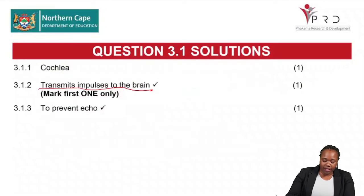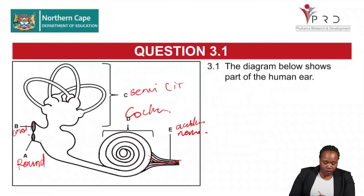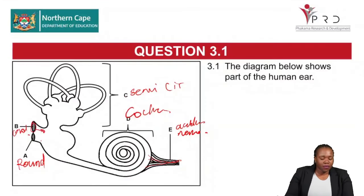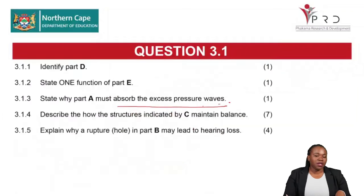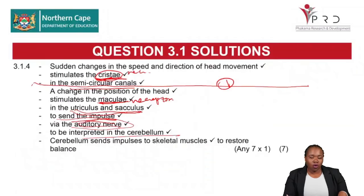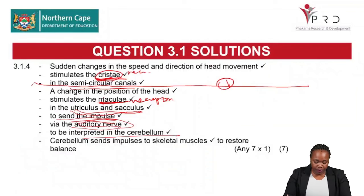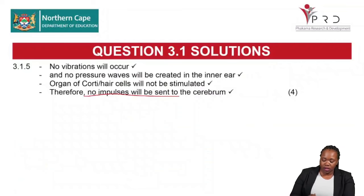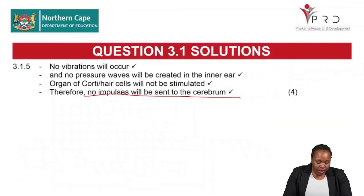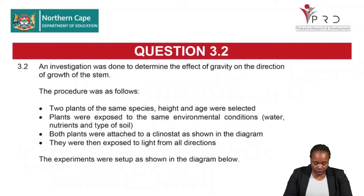The oval window is the last part of the middle ear. Without vibration from the oval window, no pressure waves are set up in the inner ear, so the cochlea and the organ of Corti will not be stimulated. The cerebrum will not receive any impulses, meaning hearing will not take place and the person will not be able to hear.